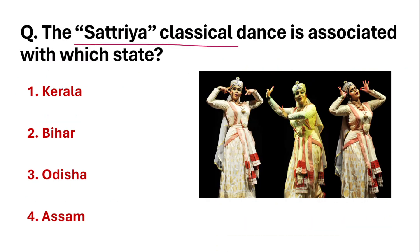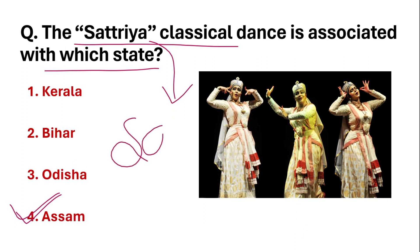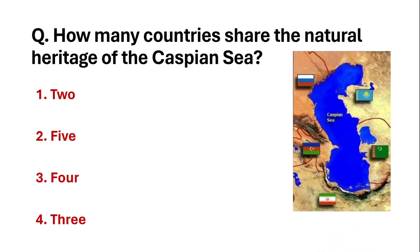The Satriya dance is associated with which state? Satriya dance belongs to Assam. The Satriya dance was originated from Satras by Shankar Dev, who is Assam's famous saint and a Vaishnavism reformer saint. He originated this dance form. An important point is that Bharatanatyam is different — the other question is about Assam.